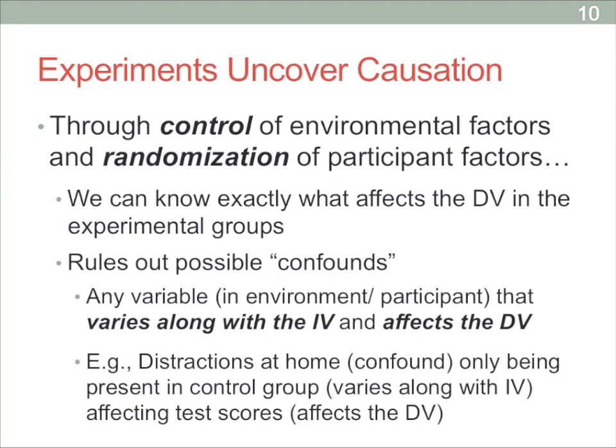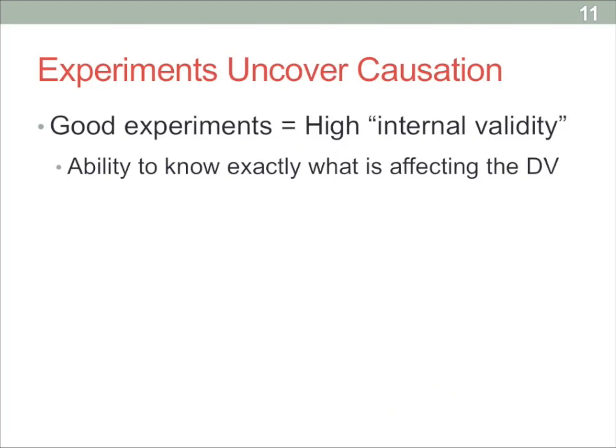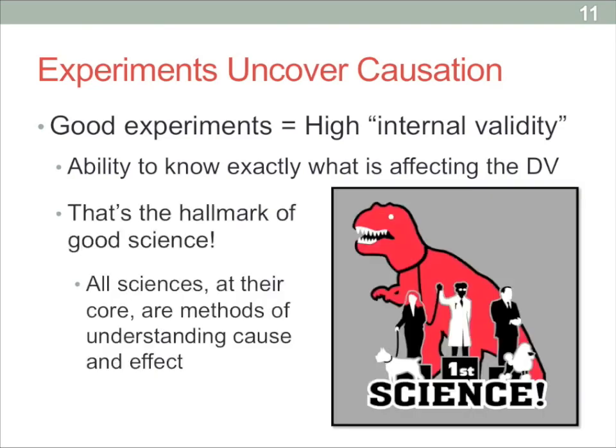A confound must affect the dependent variable and also be different between groups in order to yield those between-group differences. This is why good experiments have high internal validity. With good control over everything participants are exposed to and randomization in assigning them to groups, you know the groups are well-balanced, and anything differentiating them at the end — higher test scores, more behaviors, happier mood — must be due to the independent variable. This is really the hallmark of science: science is exceptionally good at testing cause and effect through randomization and experimental control, which is why experiments are considered the best type of study in any scientific domain.